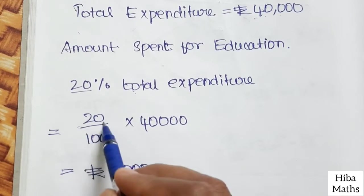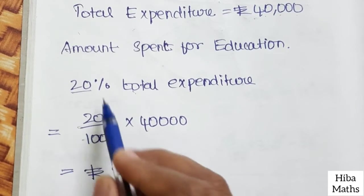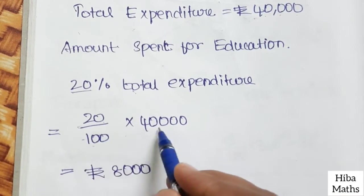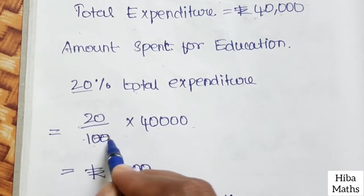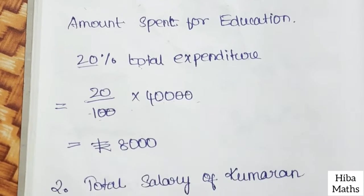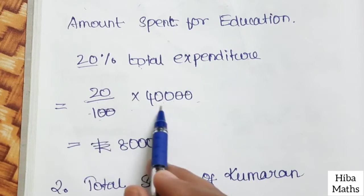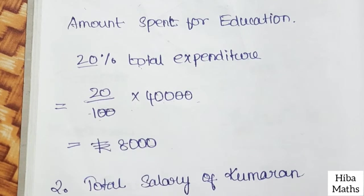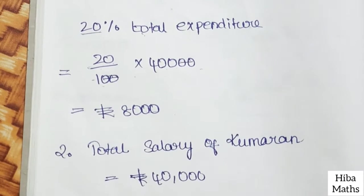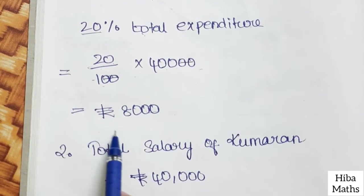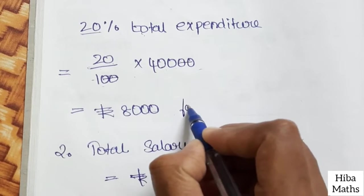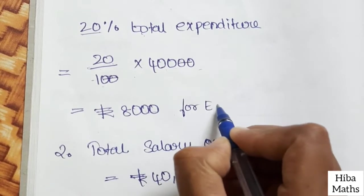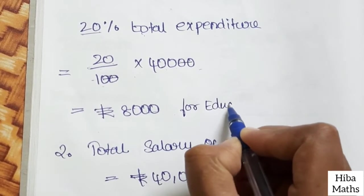Education amount: 20 divided by 100 into 40,000 equals Rs. 8,000. So the amount spent for education is Rs. 8,000.